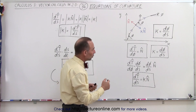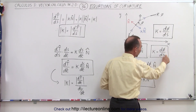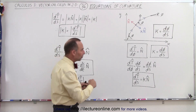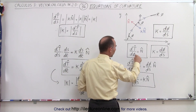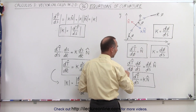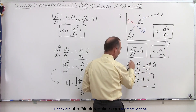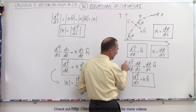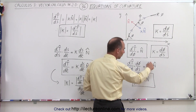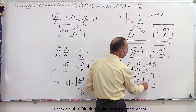We know that the curvature kappa equals the change in the angle phi with respect to the distance traveled along the curve s. If we multiply the equation dT/dφ = N by dφ/ds on both sides, we get dT/ds on the left side — eliminating phi — and on the right side we end up with kappa times the unit normal vector.